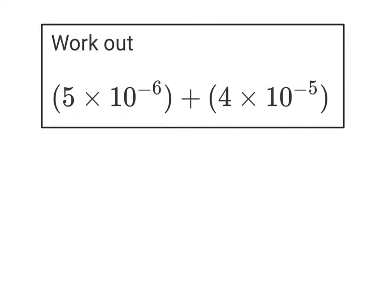Work out 5 times 10 to the power of negative 6, add 4 times 10 to the power of negative 5. So we're going to turn each of these standard form expressions into ordinary numbers first. So let's just get my place value table ready.